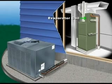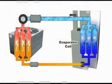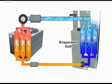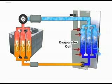The evaporator coil is where the air that we are trying to cool is reduced in temperature. As the warm air passes over the evaporator coil, the heat energy in the air is transferred to the refrigerant in the evaporator coil.